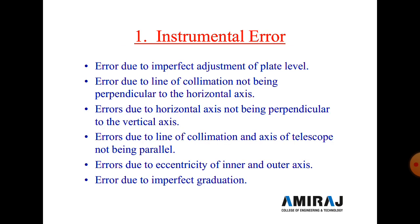The first type is instrumental error. As the name indicates, the error is generated by the instrument itself. For example, if the instrument is damaged or the graduation is not perfect, when we take a reading, an error is generated. This is called an instrumental error.